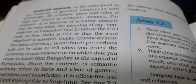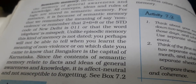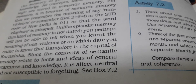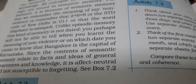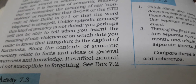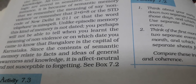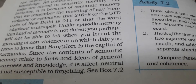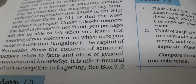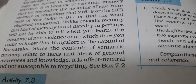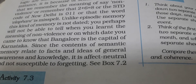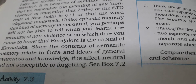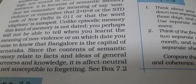Next is semantic memory. Semantic memory is the largest section of long-term memory which includes the most organized record of facts, concepts, meanings and ideas about the external world that we acquire. Examples include one's ability to recall names of the capital of different states of India, the meaning of the symbol CO2, the rules for converting direct narrations into indirect narrations, and so on.